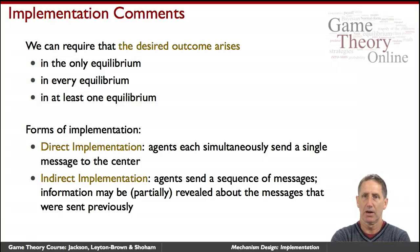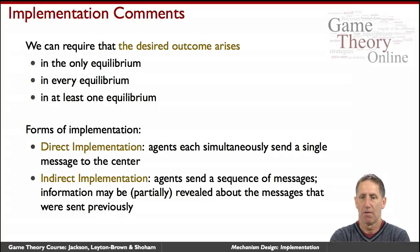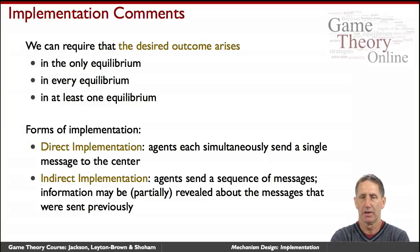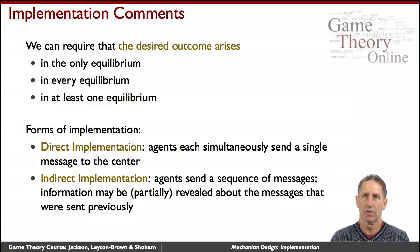In an indirect mechanism, there's an iterative process of messaging back and forth. For example, in plurality with elimination, you declare your top choice, then again declare your top choice among the remaining candidates, and so on — an unfolding process. Direct implementations will turn out to be quite universal in what they can accomplish and much easier to analyze than indirect implementations. For theoretical investigation purposes, at least, they are quite central.